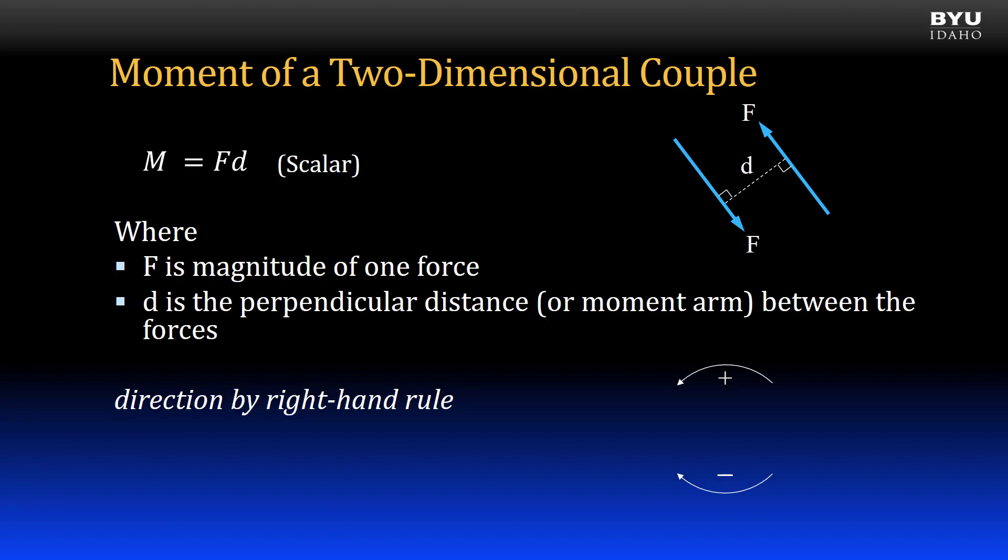The direction of the scalar moment is defined with a positive or negative sign determined by the right-hand rule. Apply it by imagining placing a pivot point in the middle of the two forces, then imagine the directions the forces would rotate about the pivot point. In this example, the rotation would be counterclockwise, which is positive.